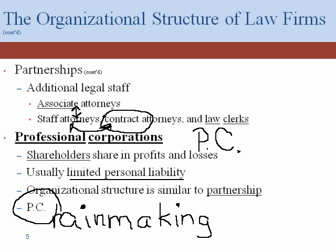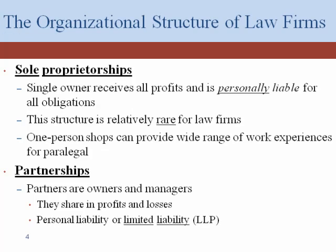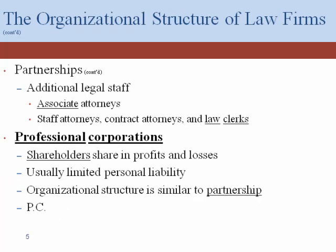This is what's called a signal — it tells the general public that if you slip on the front stoop of this business, it's a corporation, so you're not going to be able to collect money from the individual shareholders. Similarly, the LLP signal goes after the name and tells the world the same type of information about the partnership. If you have a sole proprietorship or a general partnership, you don't have any letters after the name because there's no limitation upon liability.